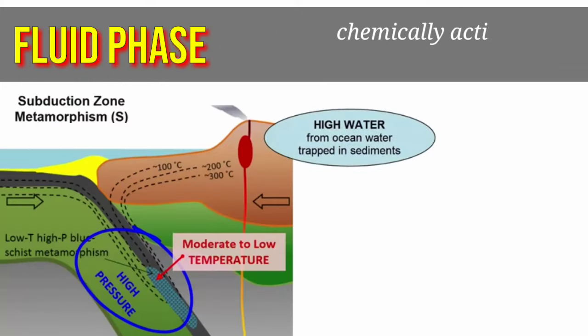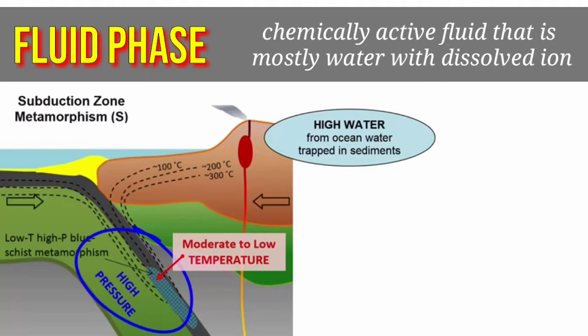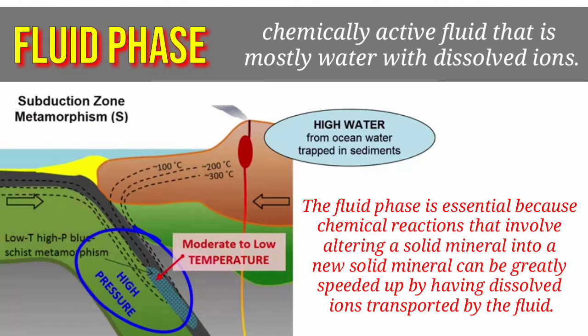Chemically active fluids — mostly water with dissolved ions — also affect metamorphism. They exist in open spaces between mineral grains and rock. The fluid phase is essential because chemical reactions that involve altering a solid mineral into a new solid mineral can be greatly speeded up by having dissolved ions transported by the fluid. This usually occurs in subduction zones.